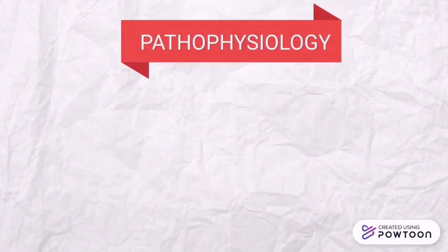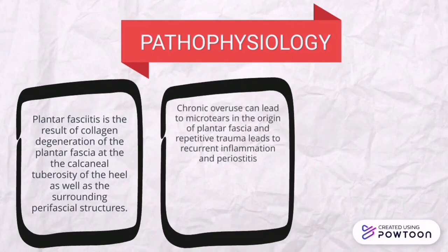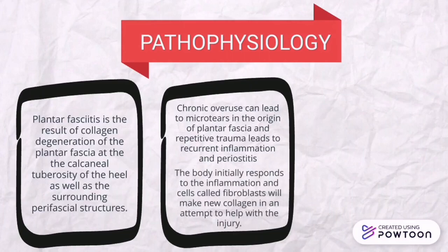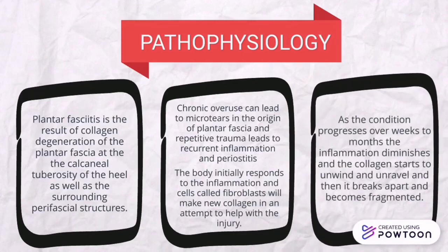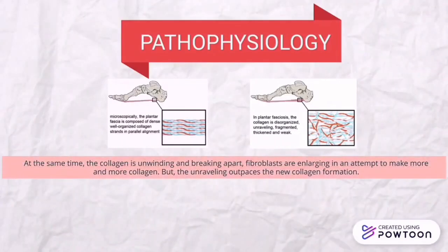Regarding pathophysiology, plantar fasciitis is the result of collagen degeneration of the plantar fascia at the calcaneal tuberosity of the heel, as well as the surrounding perifascial structures. Chronic overuse can lead to microtears in the origin of the plantar fascia, and repetitive trauma leads to recurrent inflammation. The body initially responds to the inflammation, and cells called fibroblasts will make new collagen in an attempt to help with the injury. As the condition progresses over weeks to months, the inflammation diminishes and the collagen starts to unwind, unravel, and break apart. Fibroblasts are enlarged in an attempt to make more collagen, but the unraveling outpaces the new collagen formation.